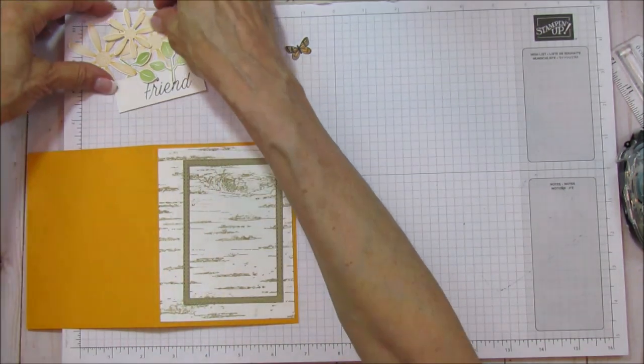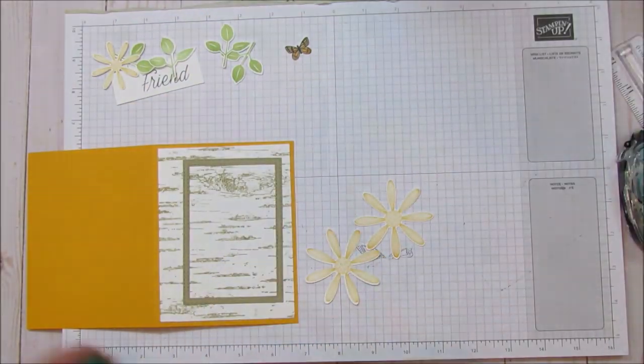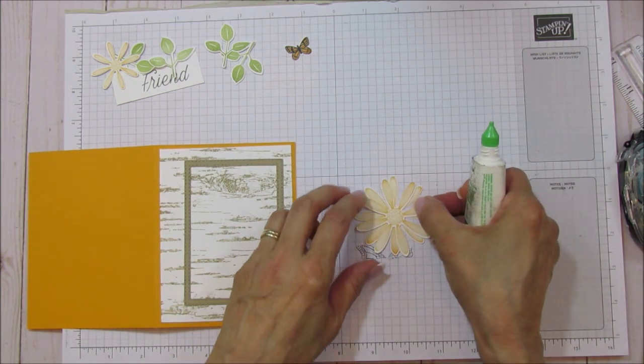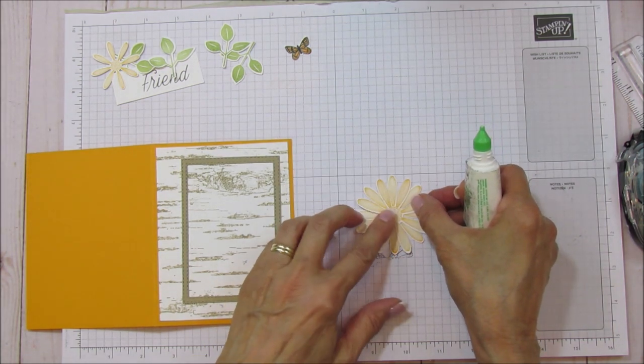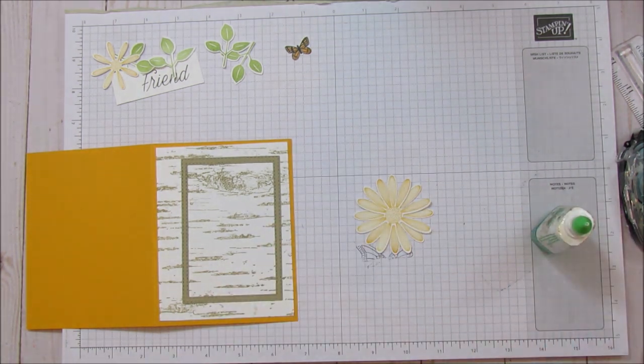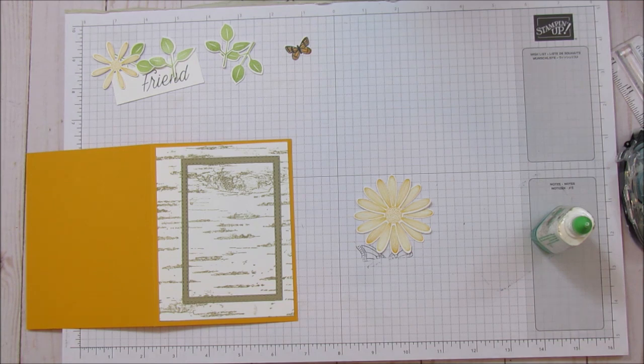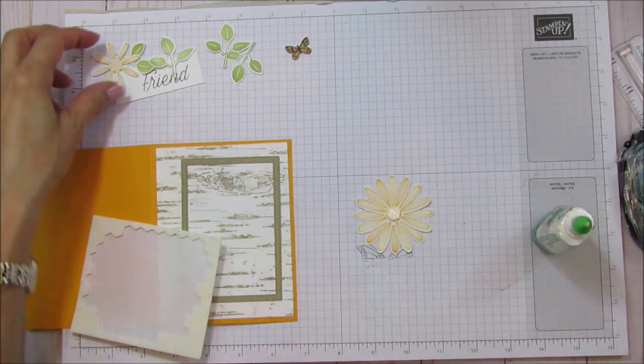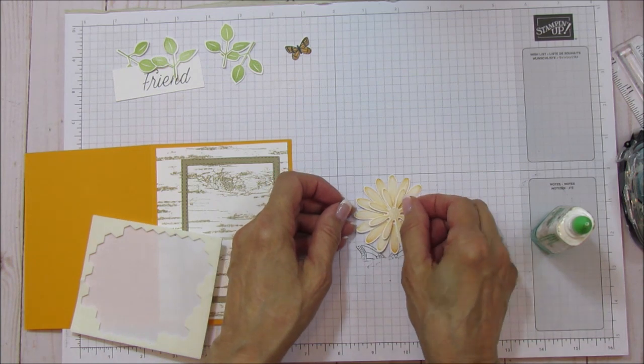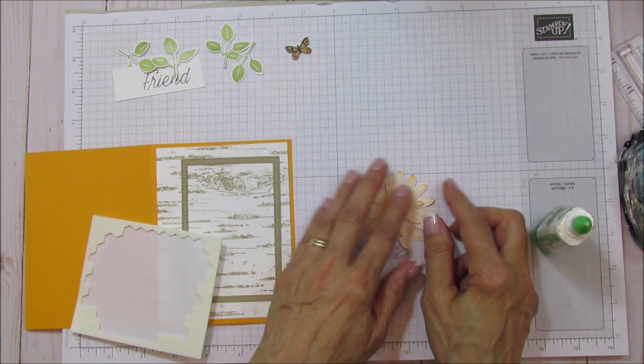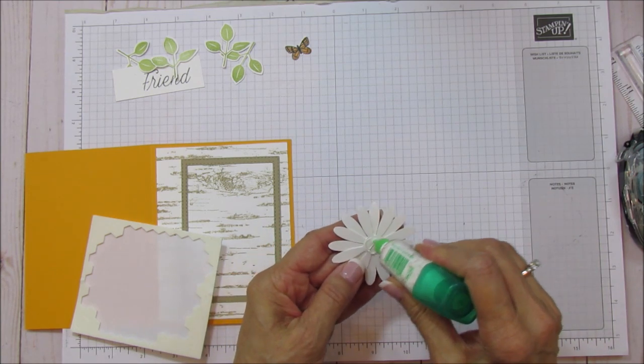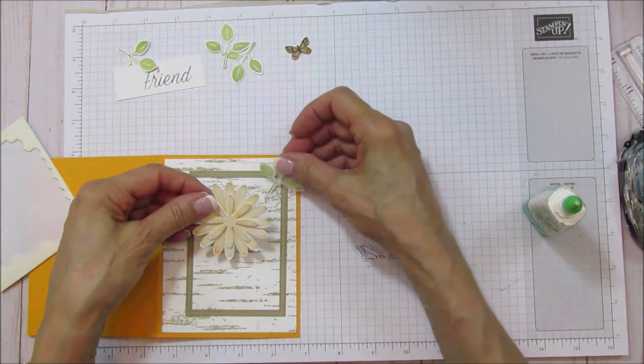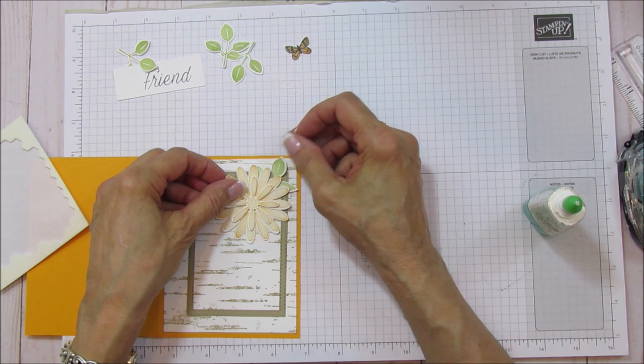And now we're going to just layer. Again, I'm going to use wet glue. We're going to layer these on top of each other. And then we're going to pop up the little one with a dimensional. And we're going to use some wet glue on the bottom here. What I'm going to do is grab one of my leaves and I'm going to place it there because I want that underneath.